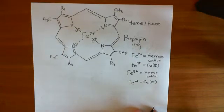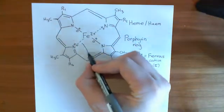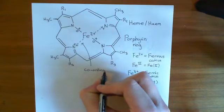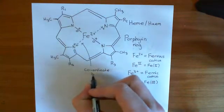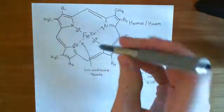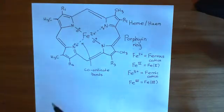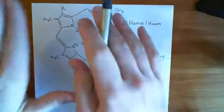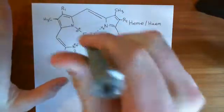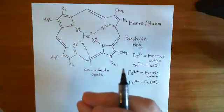The iron cation has these four coordinate bonds with the surrounding nitrogen atoms in the porphyrin ring. Iron can actually support six coordinate bonds - it can have another one coming out of the page and another coming from underneath. This whole structure is utterly planar, but you can have other species coming in from above and below to form bonds with this iron cation, and that's how we mount this heme group onto a protein.